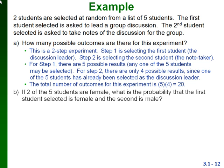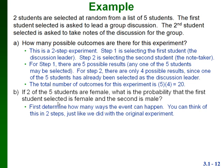Another problem to do with this: let's say that two out of the five students are female. What's the probability that the first student selected is female and the second student selected is male? We already know the total number of outcomes in our sample space from the previous part — that was 20. To find the probability of this event, we figure out how many different ways it can happen and divide by the total number of outcomes in our sample space.